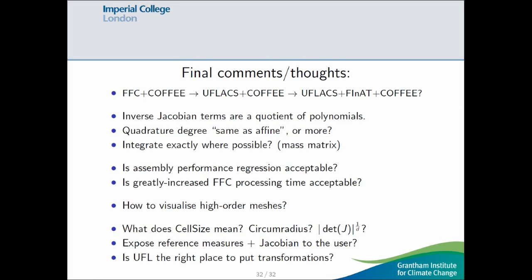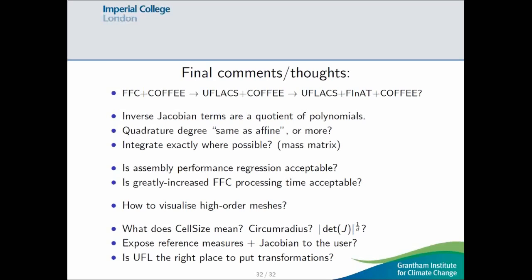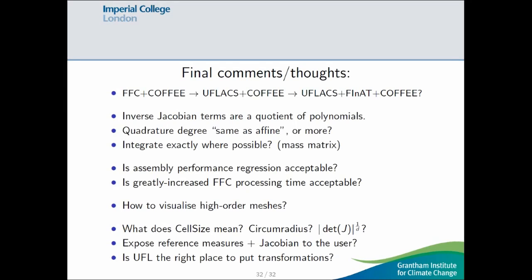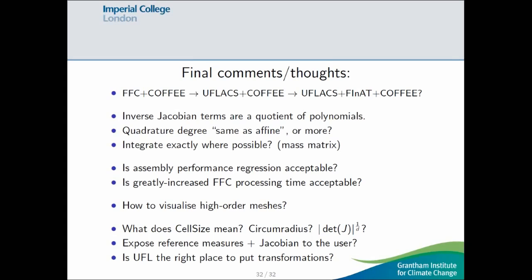How do we visualize this higher-order data? What does cell size mean? If you're not on a triangle and you're not on a tetrahedron, so, in Phoenix, this is hard-coded to circumradius. Should it really be something involving the determinant of the Jacobian? Should we be exposing reference measures and Jacobian entries to the user so that they can write sort of their own code? And, is UFL the right place to put these transformations, or do they really live in the form compiler? So, some questions for you guys, and I'm done. Thank you.